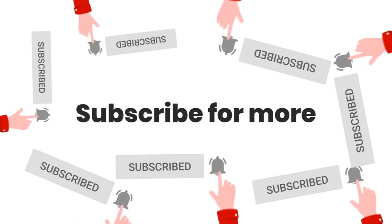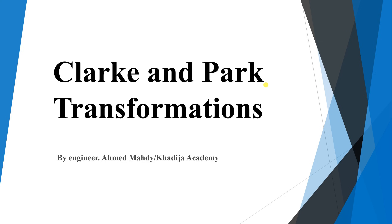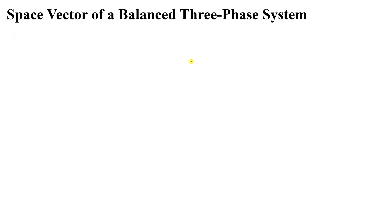Welcome to another lesson in our course for DG, or distributed generators. In this part of the course we will start discussing vector control. In order to understand vector control, we need to understand two very important transformations: Clark and Park transformations. These two are very important in vector control — you will find that every vector control contains Clark or Park or even both of them. So let's understand what the problem is exactly. First, we need to draw the space vector of a balanced three-phase system.